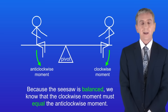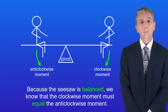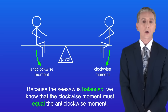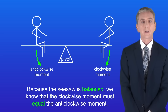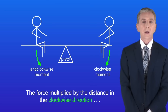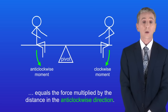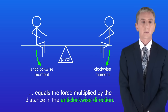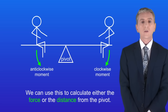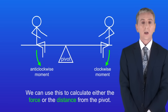Because the seesaw is balanced, we know that the clockwise moment must equal the anti-clockwise moment. In other words, the force multiplied by the distance in the clockwise direction equals the force multiplied by the distance in the anti-clockwise direction. We can use this to calculate either the force or the distance from the pivot.